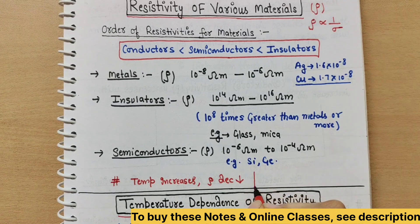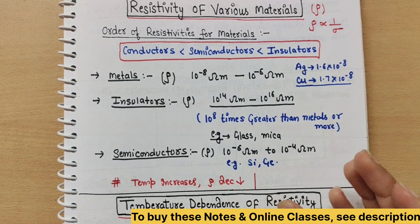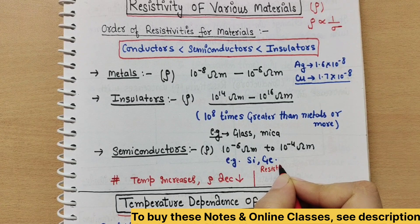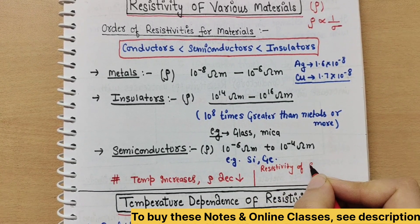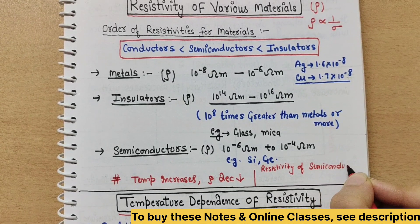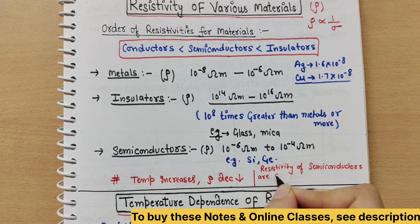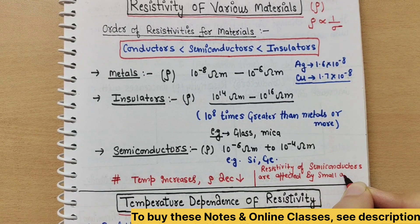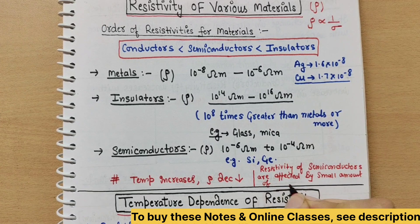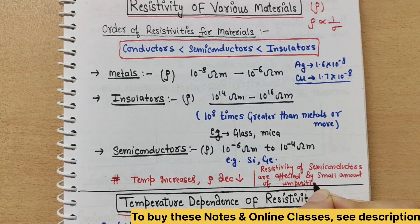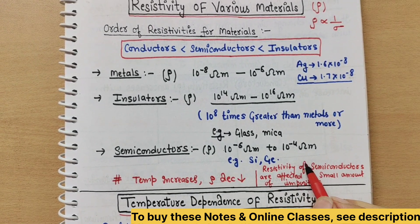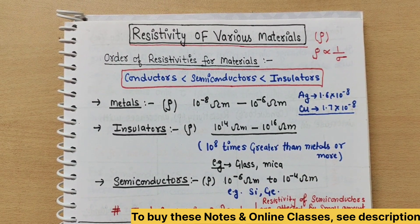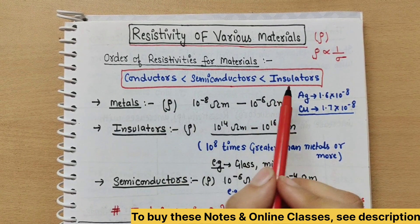In metals and semiconductors, the relationship with temperature is different. Additionally, the resistivity of semiconductors is affected by small amounts of impurity. Adding small amounts of impurities affects the resistivity value significantly. So today we learned that resistivity has different values depending upon the nature of the material. Thank you so much.